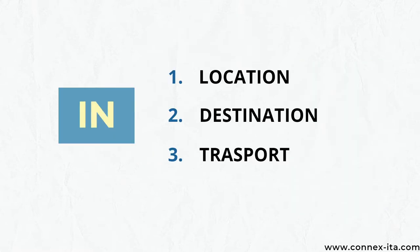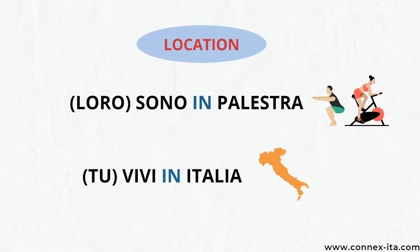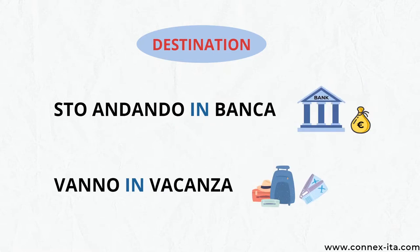Let's continue with the fourth preposition, 'in', that's mostly used to say where you are or where you are going, and also which transport you are getting to reach a place. For instance, 'Loro sono in palestra' — they are at the gym. 'Tu vivi in Italia' — you live in Italy. 'Sto andando in banca' — I'm going to the bank. 'Vanno in vacanza' — they go on holiday. In all these cases, the preposition 'in' is telling you about someone's location or where they are heading to.